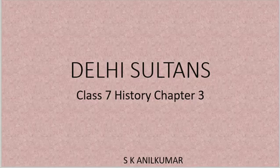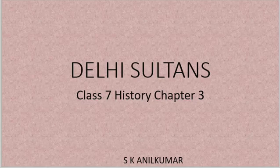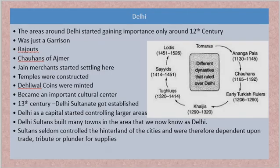In this video we talk about Delhi Sultans — Class 7 History Chapter 3, NCERT pattern. When we started to have large kingdoms ruled out of Delhi, keeping Delhi as a capital, those were mostly sultans, so we call that as Delhi Sultanate. This happened sometime around the 12th and 13th century.